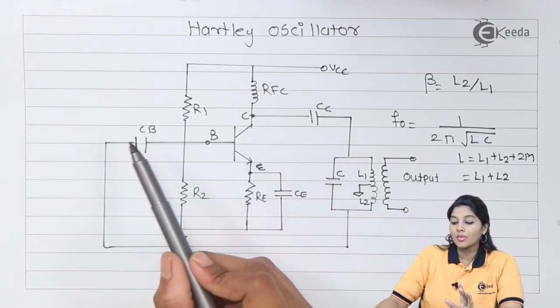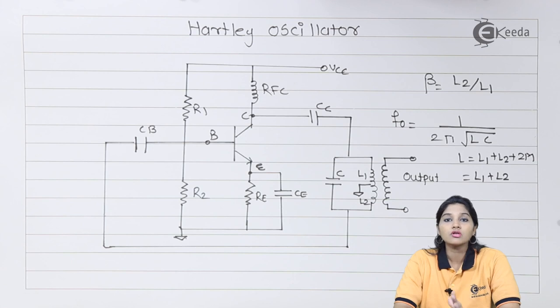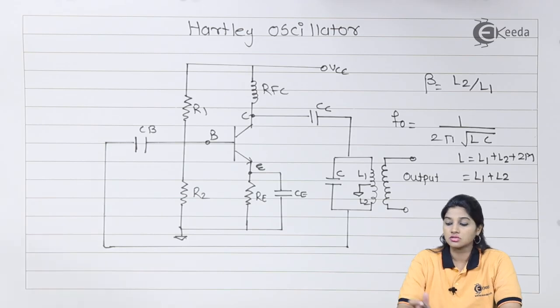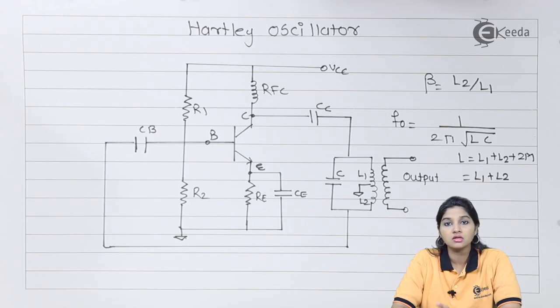The capacitor CB is also called blocking capacitor because it blocks any DC component to reach the base of the transistor. That means it allows only AC component to pass to the base of transistor. The resistors R1 and R2 along with resistor RE provide DC biasing and stabilization of the amplifier circuit.